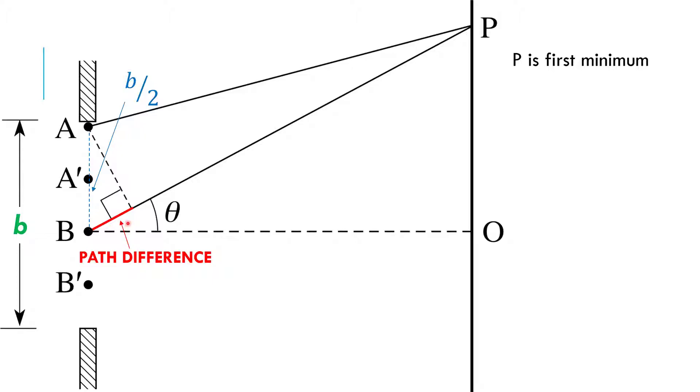And this is the path difference. Again, just like when we did the double slit, or the two source interference, we're making some assumptions, which, again, the diagram is not nearly to scale, but we are assuming that this line is more or less parallel with this line. And for the distances and sizes and such that we'll be working with, that really is a very good assumption.